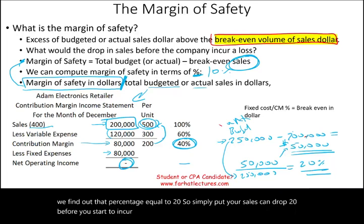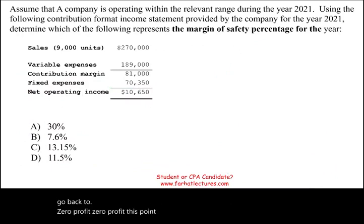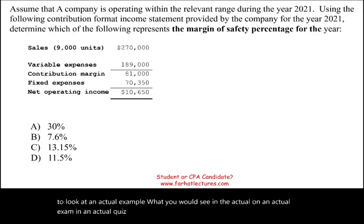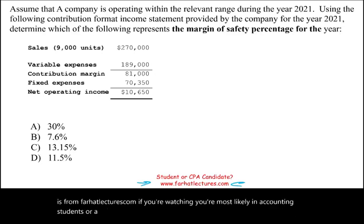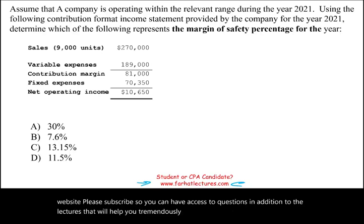If sales drop 20%, you will go back to zero profit — that break-even point. Now the best way to illustrate this is to look at an actual example you would see on an actual exam or quiz to understand this concept. By the way, this question is from farhatlectures.com. If you're watching, you're most likely an accounting student, a CPA candidate, or a CMA candidate. Those questions are on my website — please subscribe so you can have access to questions in addition to the lectures. It will help you tremendously. Invest in yourself.